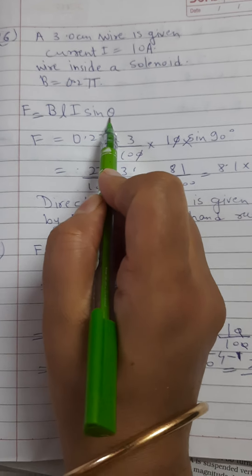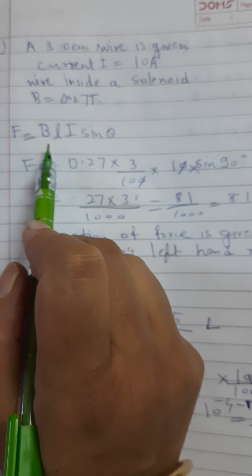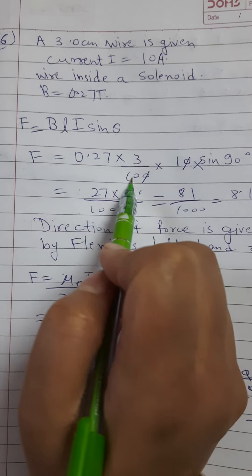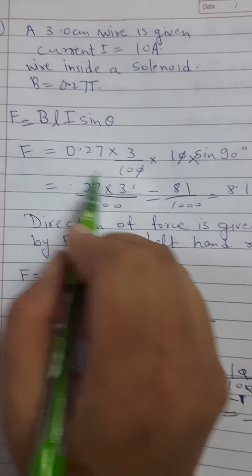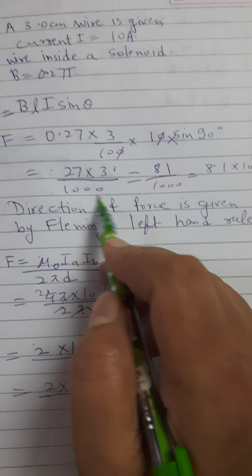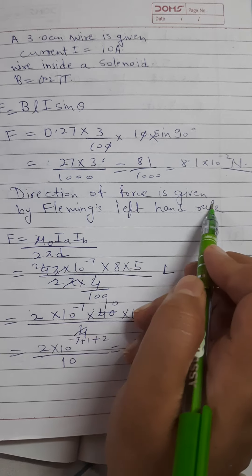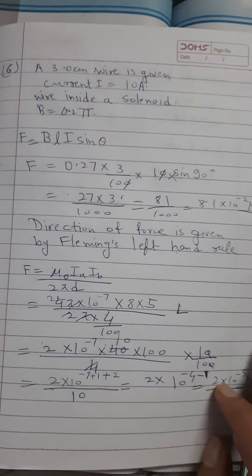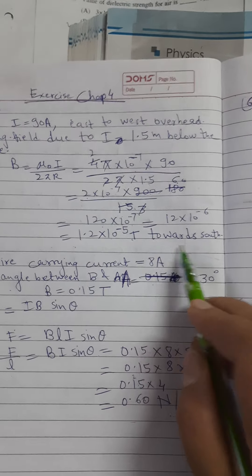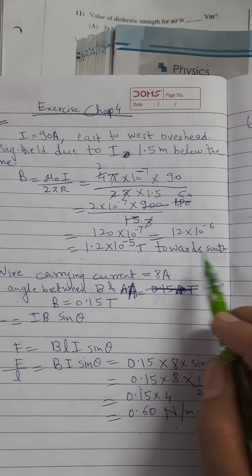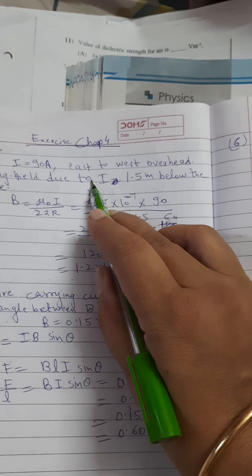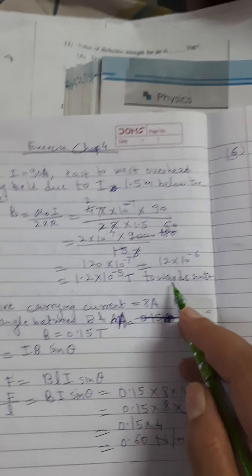θ = 90 degree लेना है क्योंकि perpendicular to the axis दिया हुआ है। B दिया हुआ है, L = 3 cm = 3/100 meter, I = 10 ampere. Put all values, you will get the answer. Direction of force is given by Fleming's left-hand rule. इसमें भी force की direction south की तरफ होगी क्योंकि current east to west flow कर रहा है।